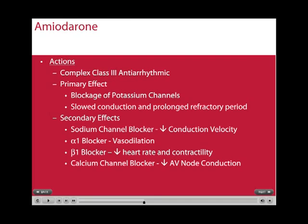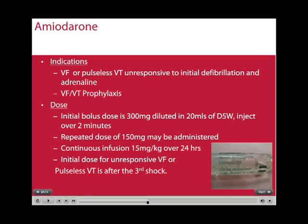Amiodarone is normally given after the third defibrillation in resistant VT/VF. It is a complex class III antiarrhythmic with its primary effects of blocking potassium channels, which slows conduction and prolongs refractory periods. Its secondary effects include sodium channel blocking, which decreases the conduction velocity, and also causes alpha-1 blocking, which causes vasodilation. Its beta-1 effects include decreasing heart rate and contractility, and it also has a calcium channel blocking effect, which decreases AV node conduction. The indications for amiodarone are for VF or pulseless VT unresponsive to initial defibrillations and adrenaline.